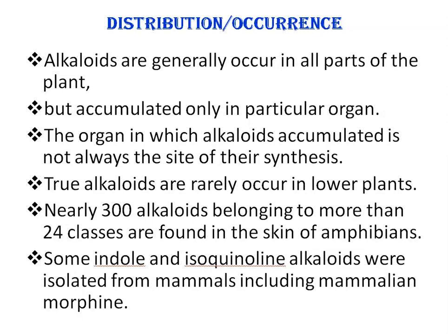True alkaloids rarely occur in lower plants. Nearly 300 alkaloids belonging to more than 24 classes are found in the skin of amphibians. Some indole and isoquinoline alkaloids were isolated from mammals, including mammalian morphine.